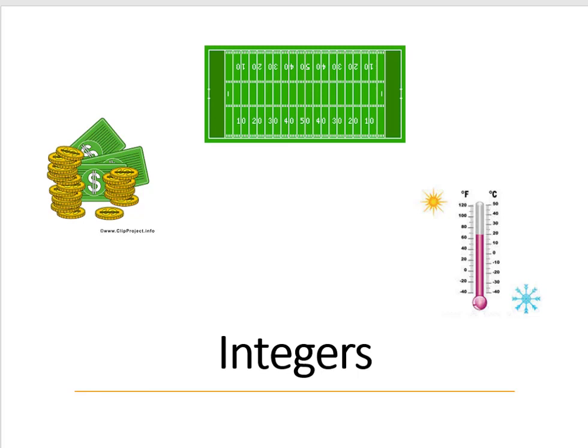You're familiar with temperatures going both above and below zero. Or with money, you can go into debt and be below zero. Or on a football field, you can gain or lose yards.